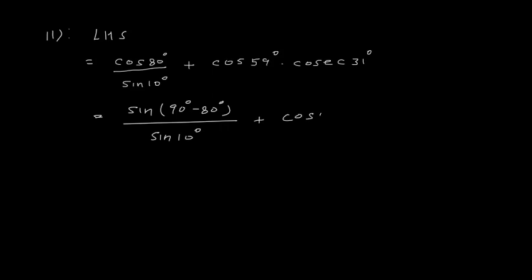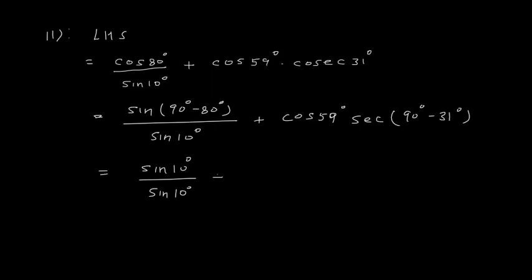Plus cos59° × sec(90° − 31°). sin(90° − 80°) = sin10°, so numerator is sin10°/sin10°. And cos59° × sec59° = 1. So 1 + 1 = 2, which is the right hand side.